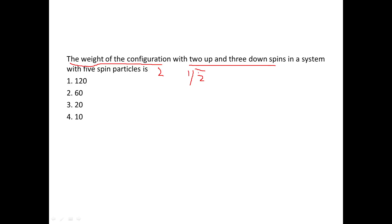We just have to find out the number of ways in which we can have this kind of arrangement — two up and three down spins. We don't even need a formula; we can count directly. The first arrangement is: the first two particles are up and the next three are down.